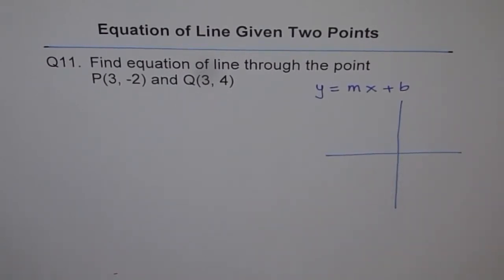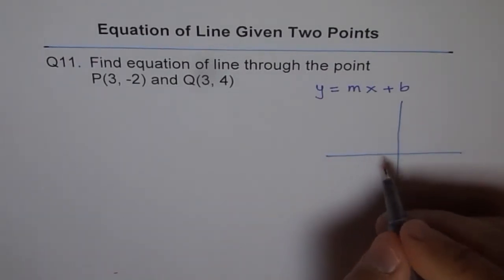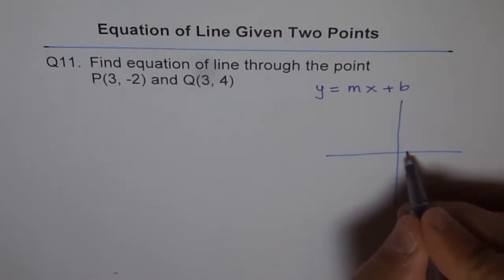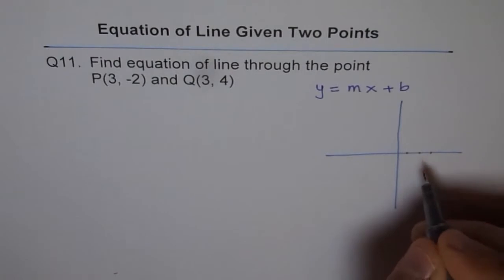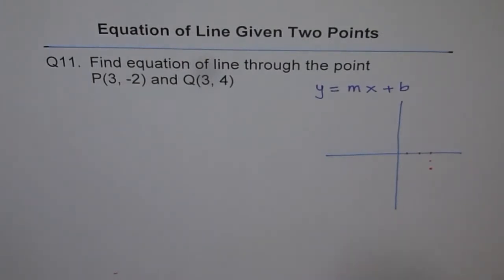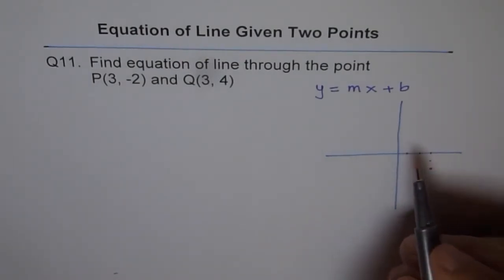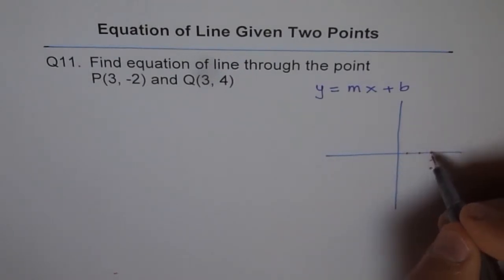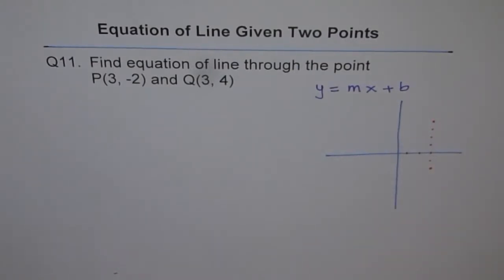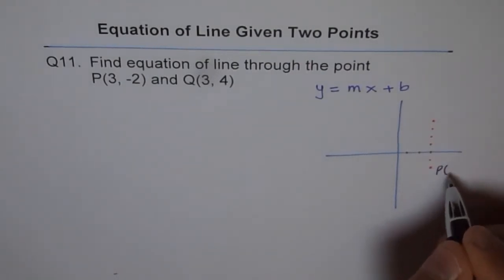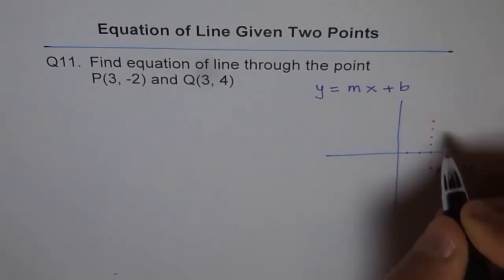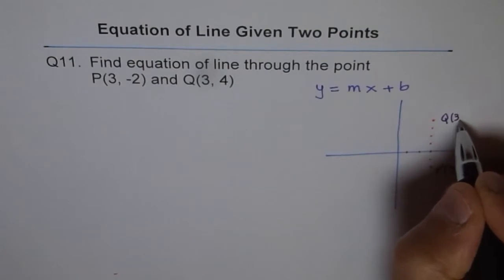Now let's locate our points. Point P is 3, minus 2. That means we'll go 3 units to the right, 1, 2, 3 and 2 units down, 1, 2. So there we are. This is point P for us. Point Q is 3 units to the right and 4 units up. So 1, 2, 3 but 4 units up. 1, 2, 3 and 4. That's the point Q for us. So let's write down our points. Here we are with P, which is 3, minus 2 and Q, which is 3, 4.